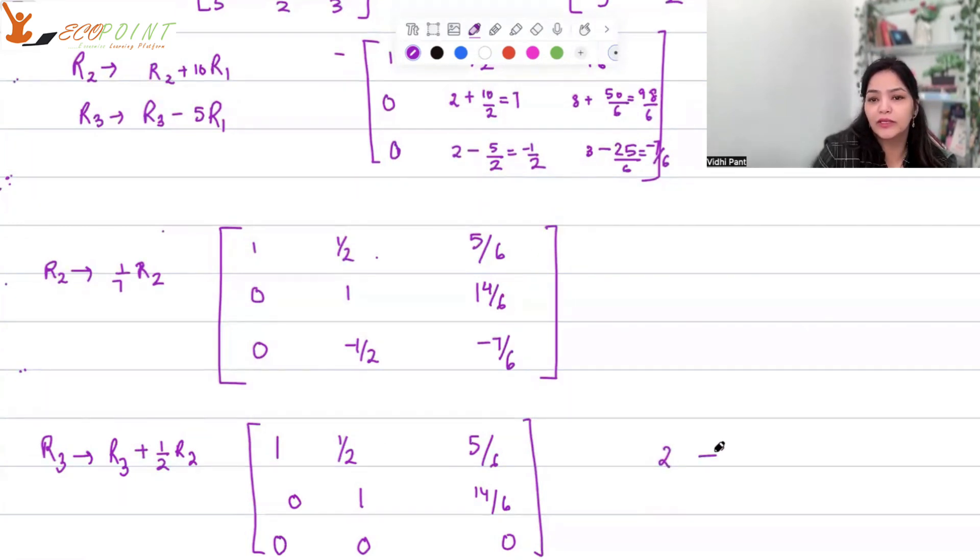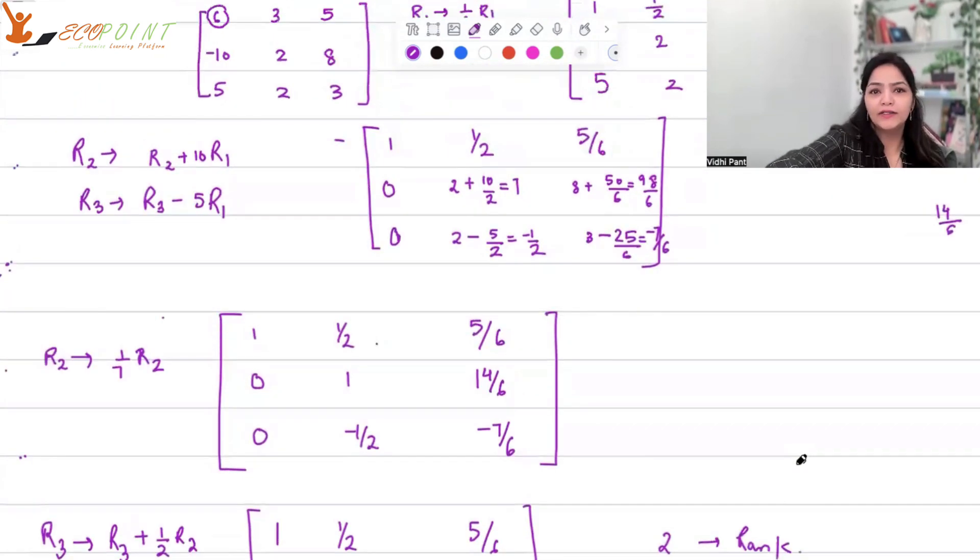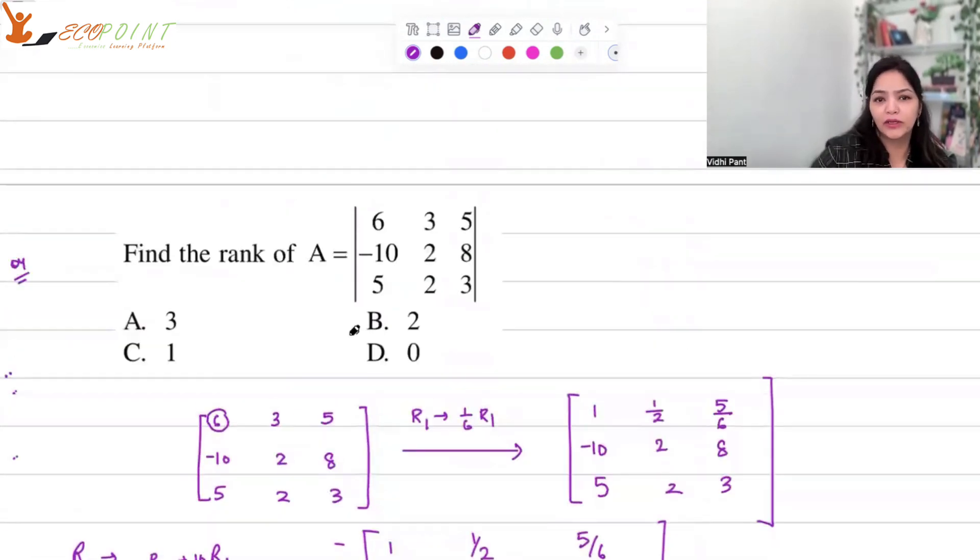2 is the rank of this matrix. Why did we have to work it out like this? It was a 3 cross 3 case. If you find the determinant of this matrix, you will find that the determinant is actually equal to 0. If the determinant is equal to 0, it's not full rank. So what the rank is, you will have to figure it out, and finally you have to answer 2. 2 is the rank.